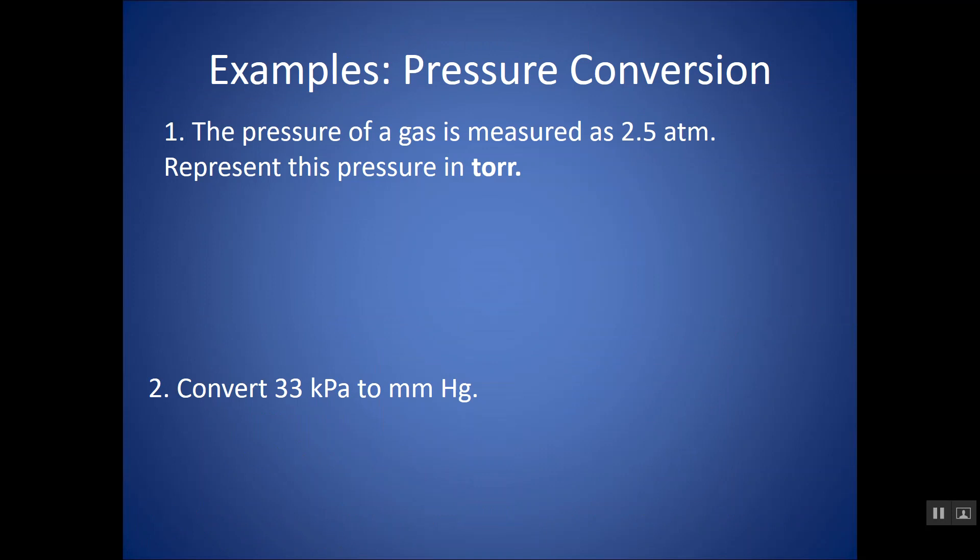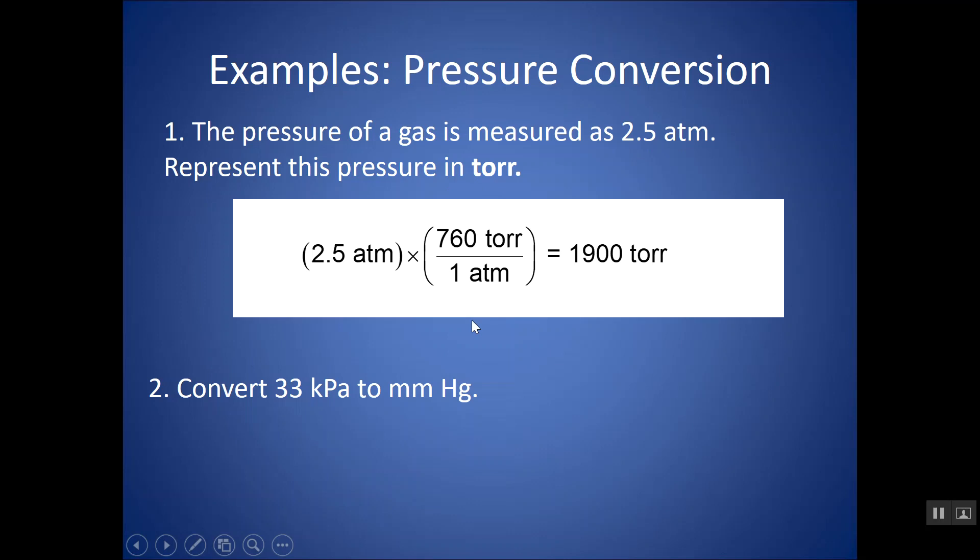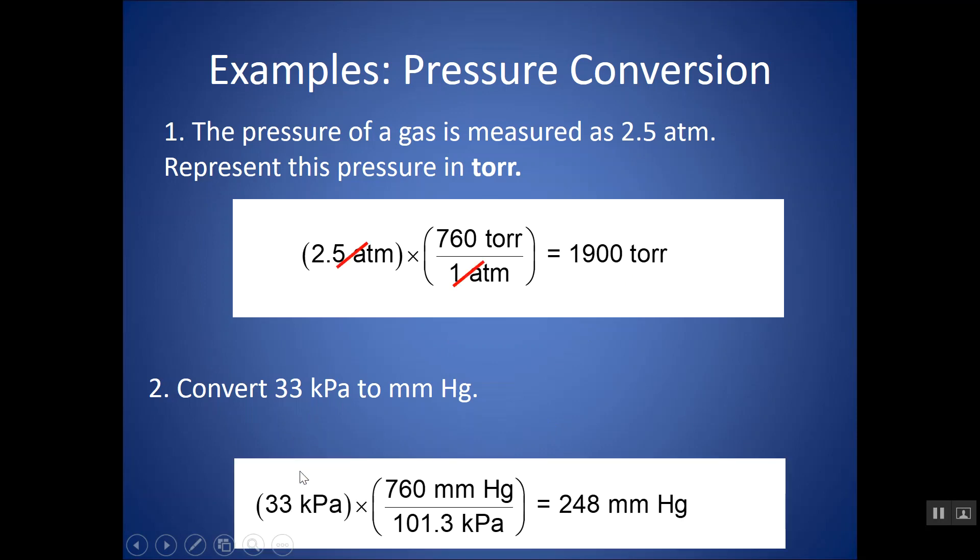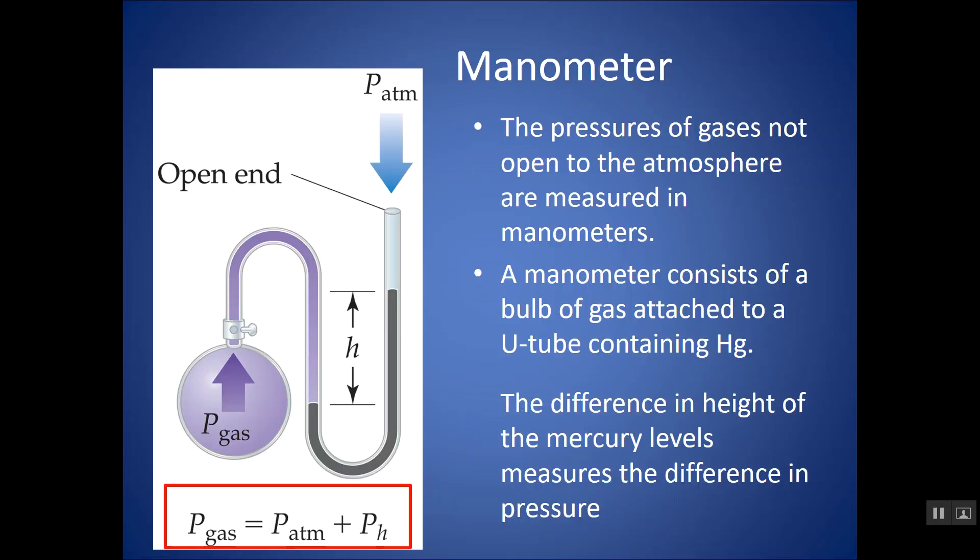So you might want to pause the video, take a moment, and try this example here. For the first, it is saying, okay, 2.5 atmospheres, let's change this into torr. So I can use via dimensional analysis, 760 torr is equivalent to one atmosphere. Make that my conversion factor and I get about 1,900 torr. In the second, I can convert 33 kPa. And these two things are equivalent to each other. So let's put this into a conversion factor and I get about 248 millimeters of mercury.